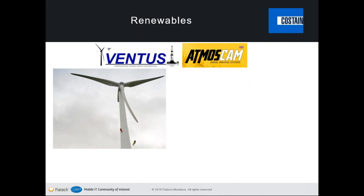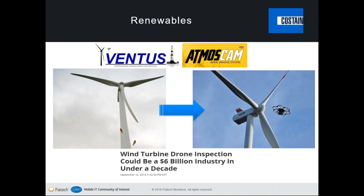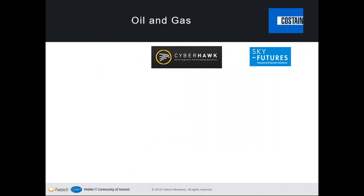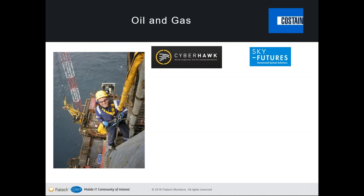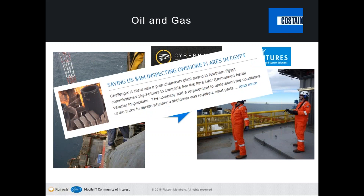Looking at industry sectors driving adoption: in renewables, wind farm inspection that was previously costly and unsafe is now being done by multi-rotors with high-definition cameras — the inspection of one type of renewable technology is now worth six billion dollars. In oil and gas, inspecting flare stacks and under-deck on North Sea platforms traditionally required highly trained personnel at great expense. More and more of that work is now done by multi-rotor UAV service operators, allowing companies to avoid shutting down parts of the plant — saving millions of pounds a day. Companies report 80% savings and up to $11 million saved by deploying UAVs in hazardous environments.